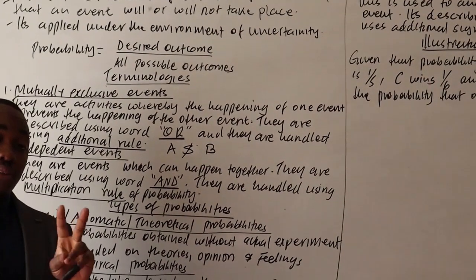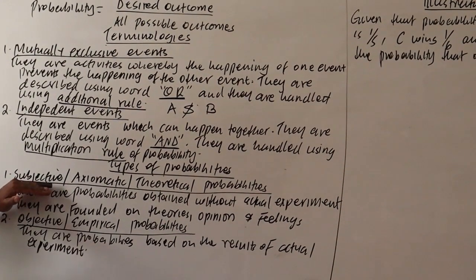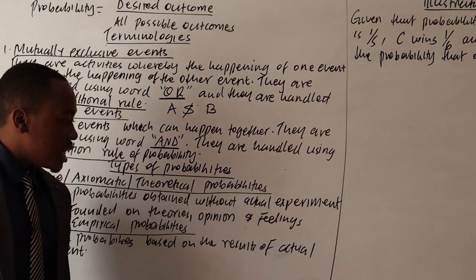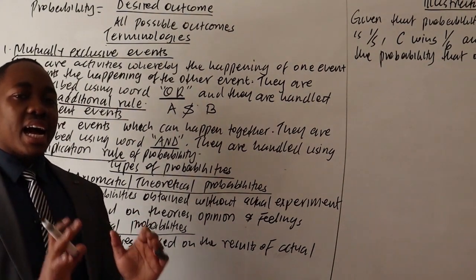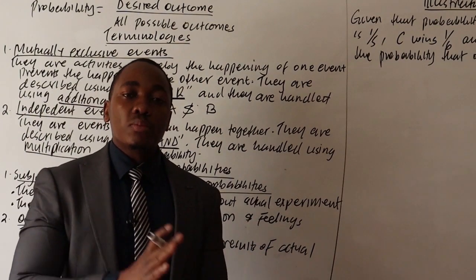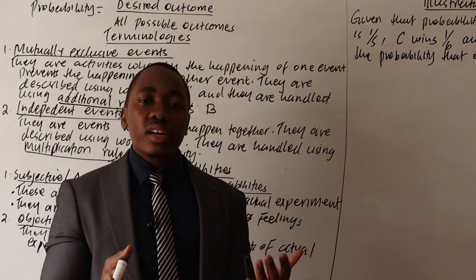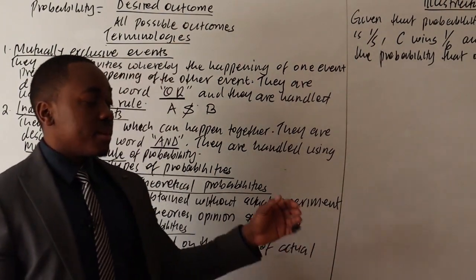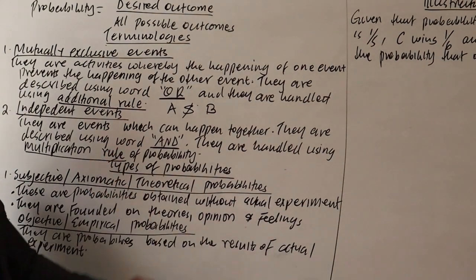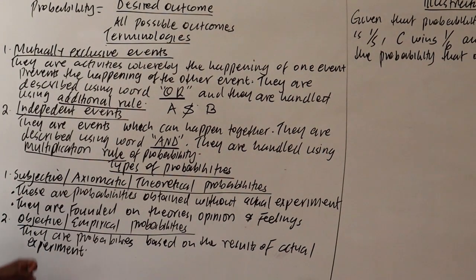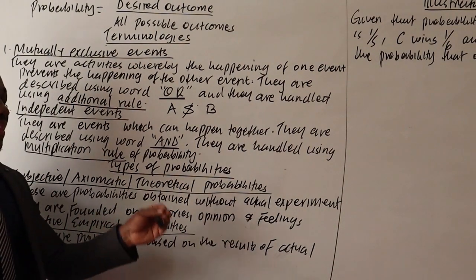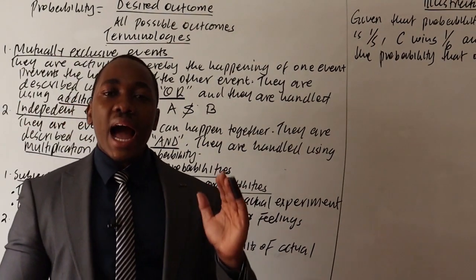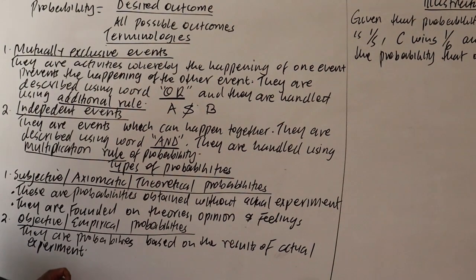There are two classifications of probability. First is subjective, axiomatic, or theoretical probability — probability obtained without actual experiment, based on theories, feelings, or opinions. Second is objective or empirical probability — probabilities which are based on actual experiment.